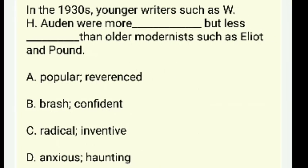In the 1930s, younger writers such as W.H. Auden were more ___ but less ___ than older modernists such as Eliot and Pound. Options: popular and reverent, brash and confident, or radical and inventive? The answer is C — radical and inventive.